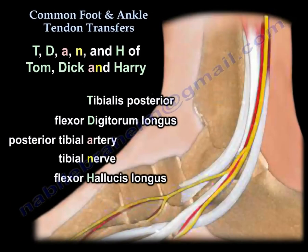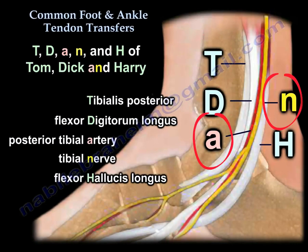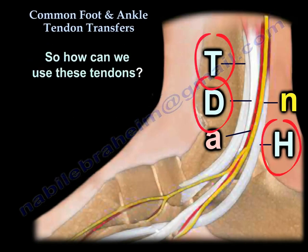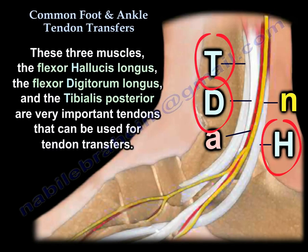This mnemonic corresponds to: Tibialis Posterior, Flexor Digitorum Longus, posterior tibial artery and tibial nerve, and Flexor Hallucis Longus. These three muscles — the Flexor Hallucis Longus, the Flexor Digitorum Longus, and the Tibialis Posterior — are very important tendons that can be used for tendon transfers.